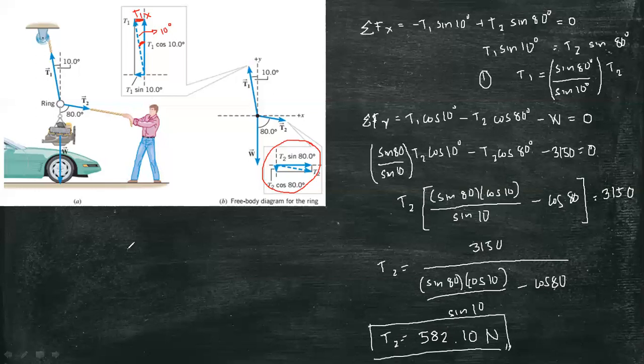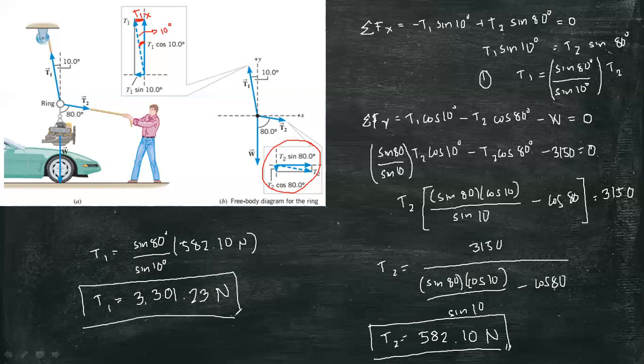We can now solve for T1 using the first equation. T1 is equal to sine 80 degrees over sine 10 degrees times T2 which is 582.10 newton. Therefore T1 is equal to 3,301.23 newton.